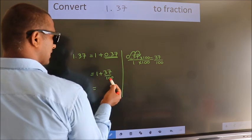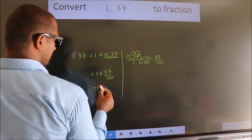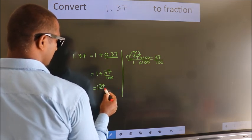So, 1 plus 37 by 100, in mixed fraction it is 1 and 37 over 100.